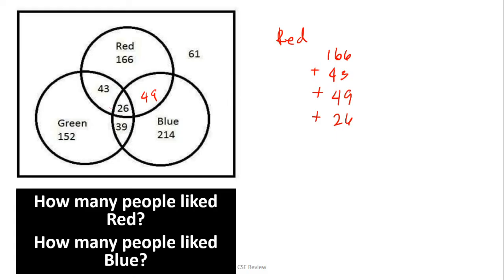How many people like red is: add everything inside the red circle because those are all the people who like red. So the people who like red are 166 plus 43 plus 49 plus 26. If you add that, you're going to have 284. And that 284 is everything in the red circle because those are all the people who like red.